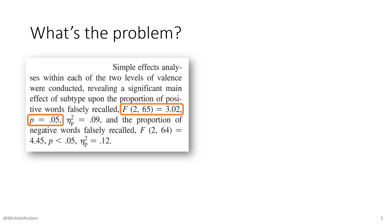Let's start with the problem. This snippet of text you see here is a paragraph from a published psychology article. Most conclusions in psychology and related fields are based on statistical results like the one highlighted here. It says simple effects analyses within each of the two levels of valence were conducted, revealing a significant main effect of subtype upon the proportion of positive words falsely recalled, and then there's an F-test reported.